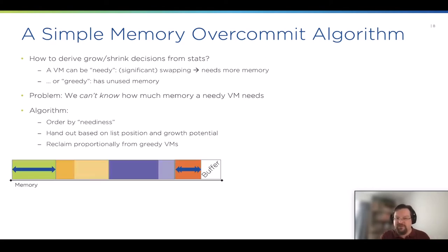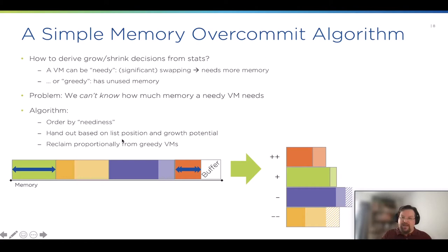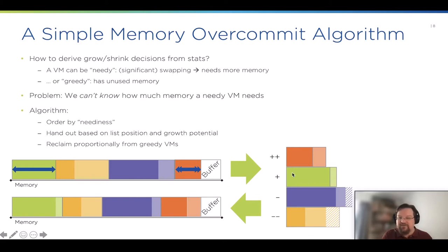The algorithm goes like this: you look at the VMs running on the system and order them by their neediness. For example, the red VM has a lot of memory pressure, a lot of swap happening. The green VM is not swapping as much. If you order them, you have the red, green, and then the two VMs not showing any neediness at the moment. Then you hand out based on that list position. The red VM gets more memory than the green VM, and the blue and yellow VM give up some memory accordingly. You come up with this plan and grow and shrink the VMs accordingly, then rinse and repeat. Of course, there are a lot of special corner cases and situations to think about, but I will not go into detail in this talk. This is the basic idea of the algorithm.